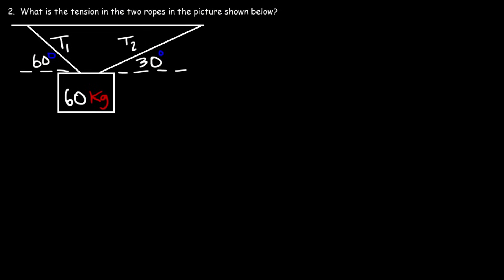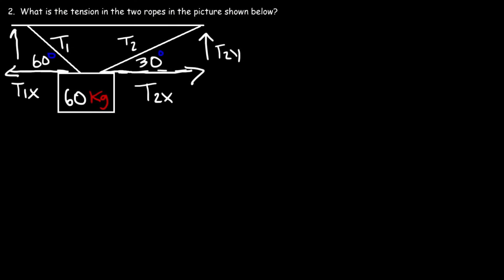Now let's work on this problem: what is the tension in two ropes as shown? The crate is in equilibrium — it's at rest — so the sum of all forces in the x and y directions must add to zero. We want to break down T1 and T2 into their components. T2 has an x component and a y component; T1 also has an x component and a y component. The crate also has a weight force.